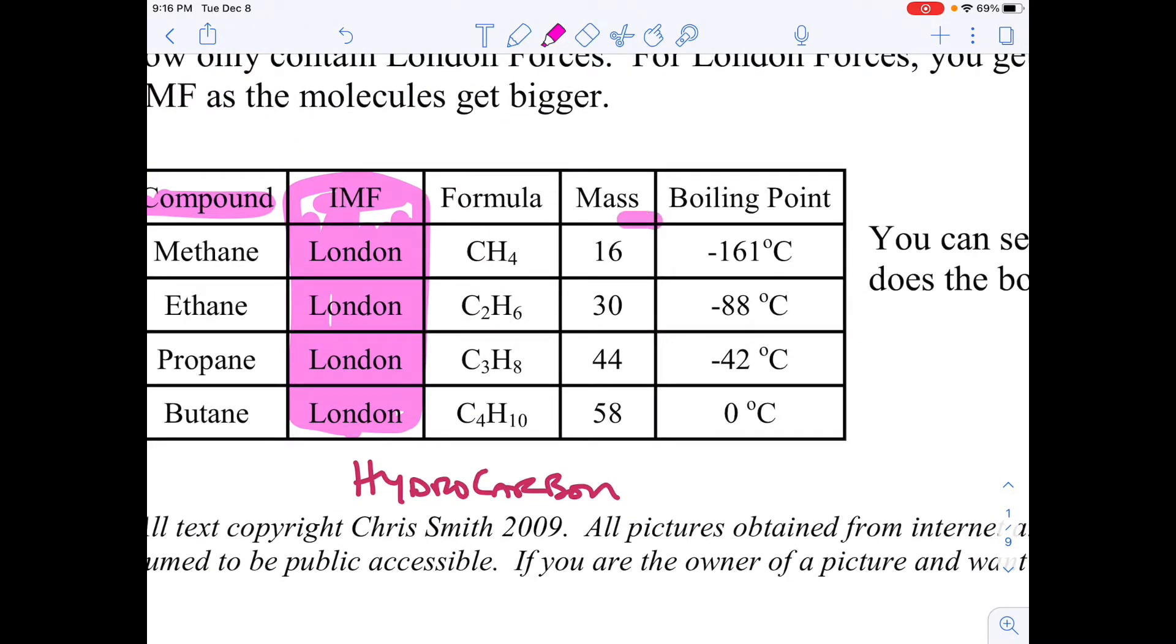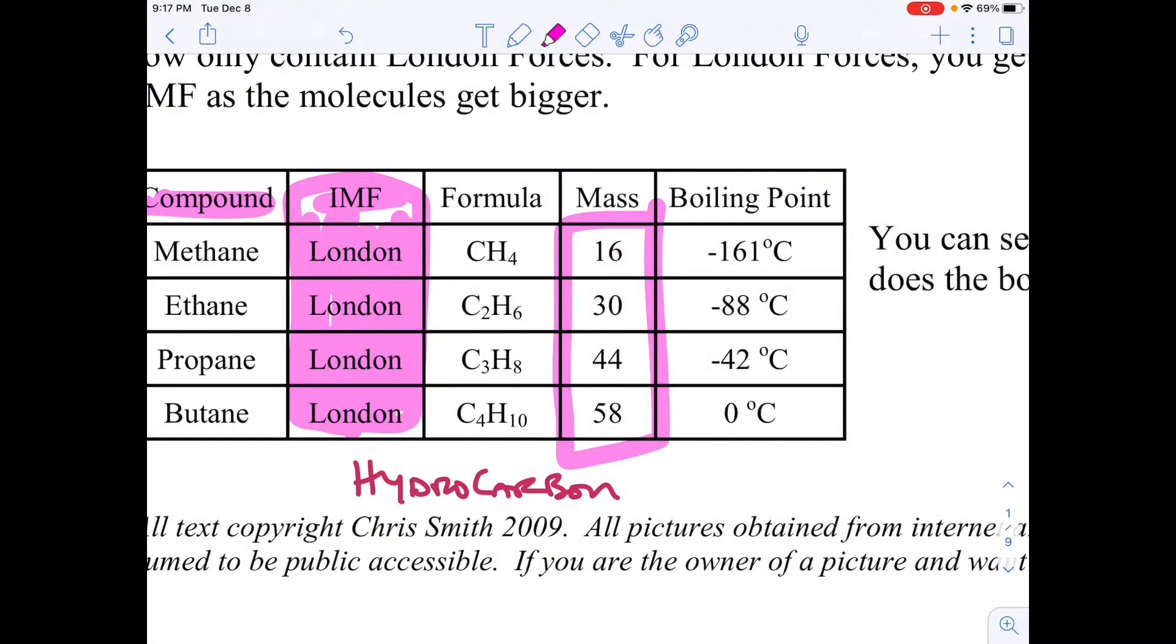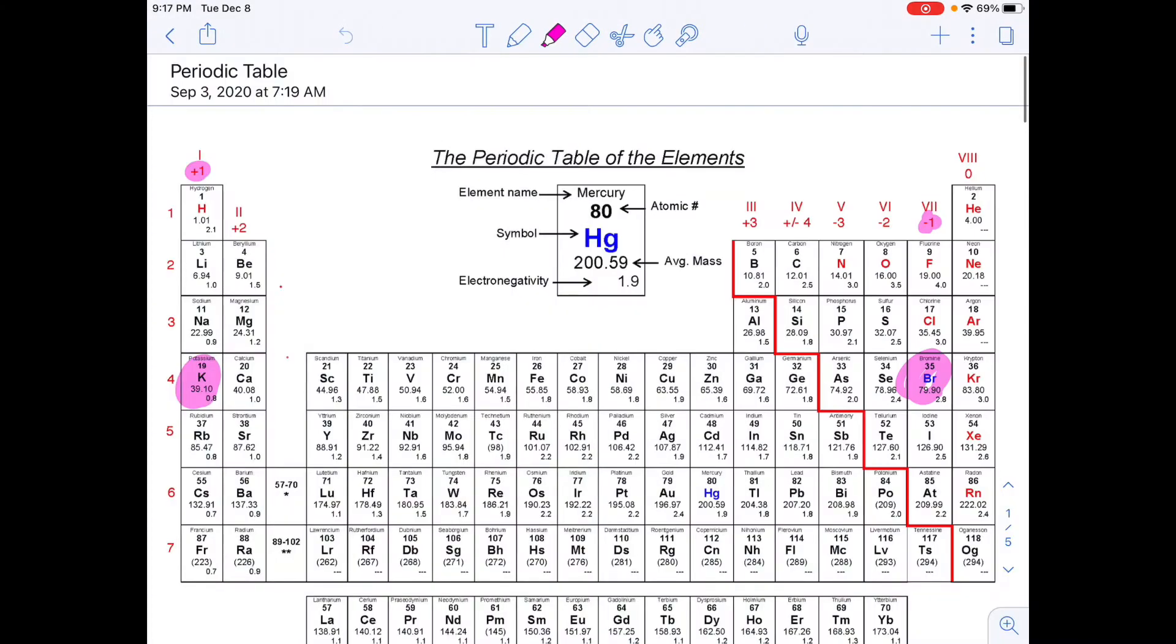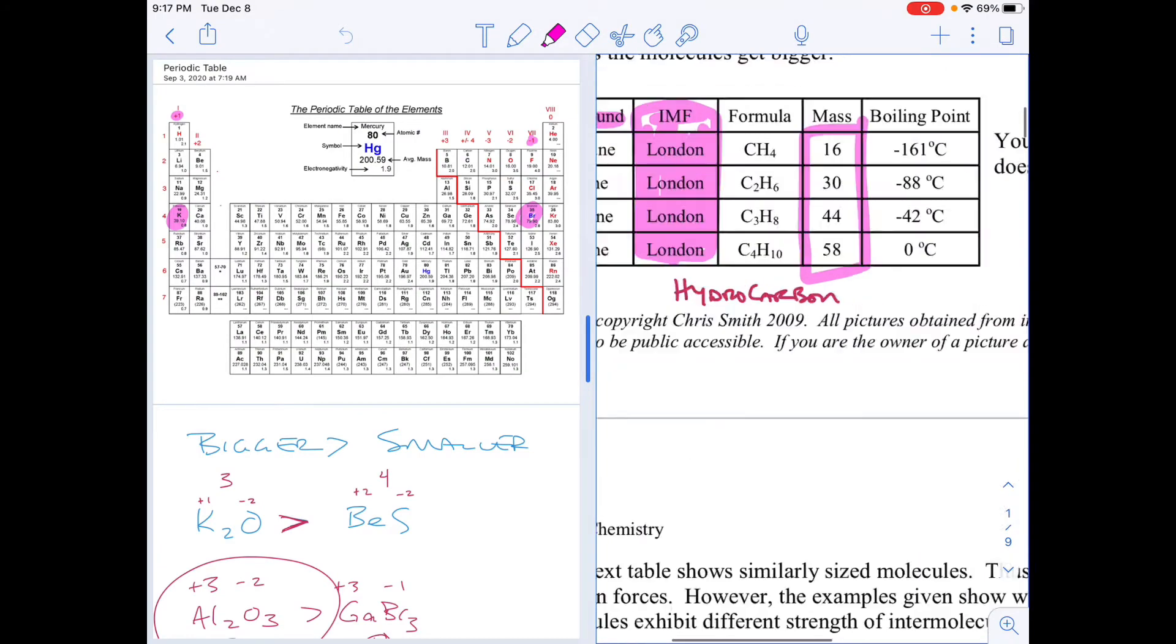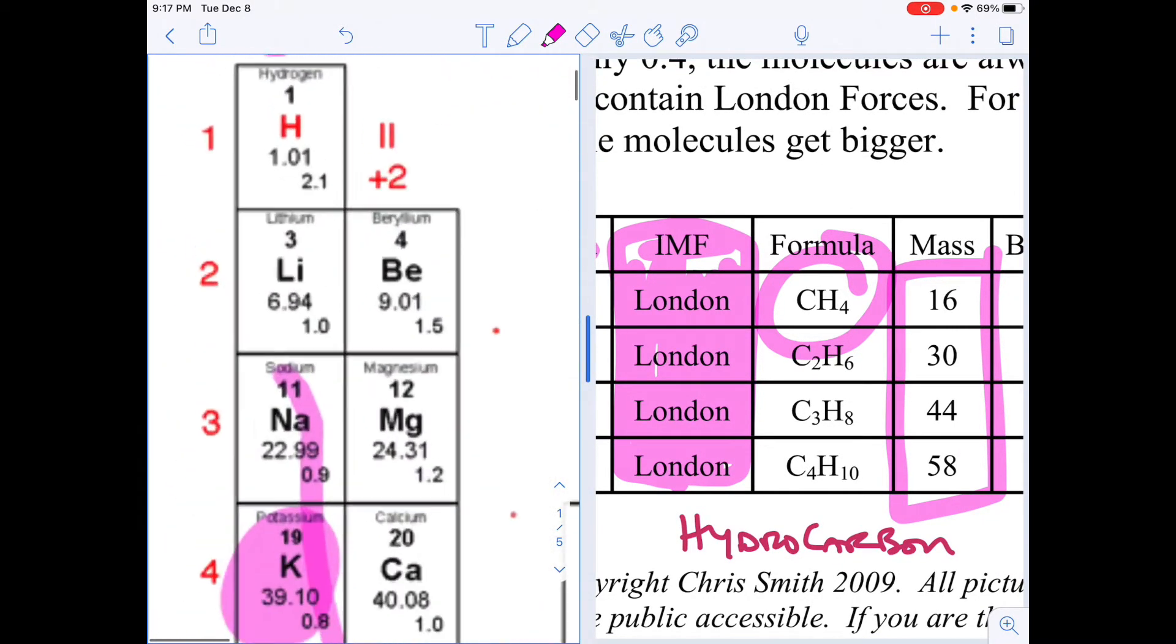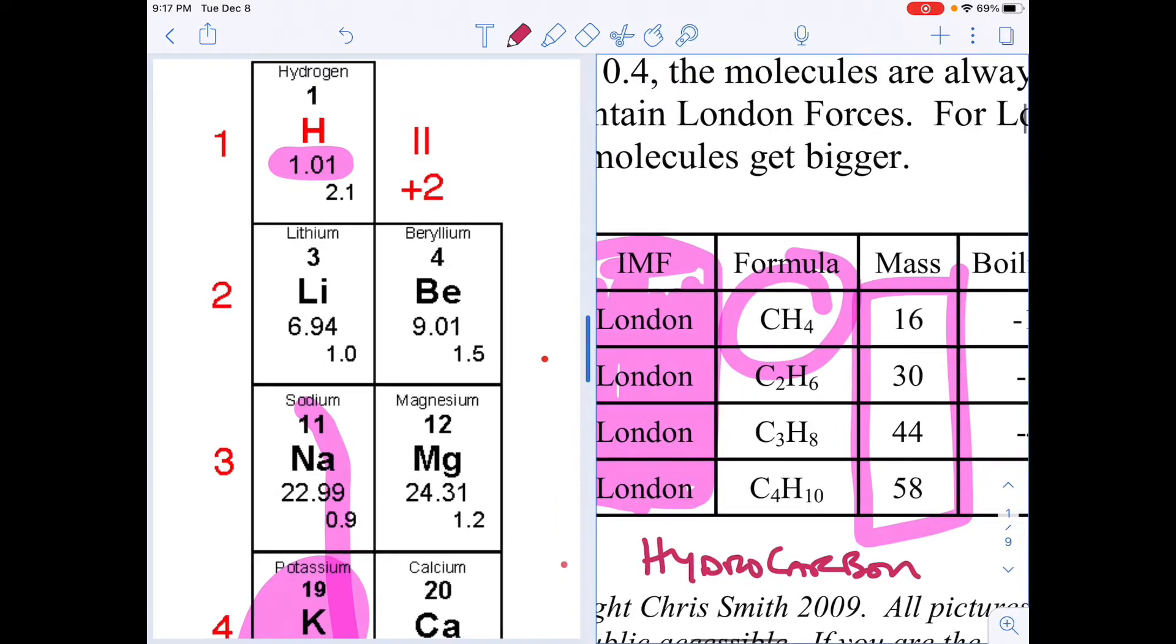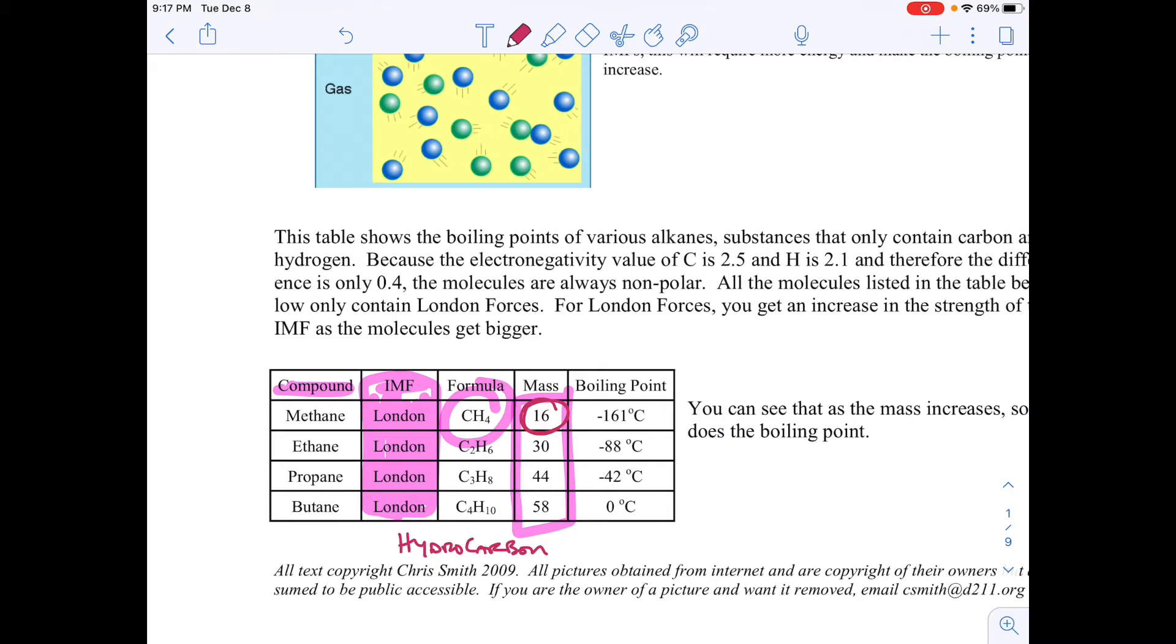In order to do this, we would go back to my IMFs, and I have CH4. I would find carbon, its molar mass is 12, and then I have four Hs way over here. Each of those is worth one, so that gives me a total of 16. That's where we're getting that number from. That's something we'll go into in more depth later.